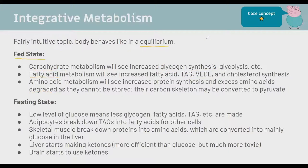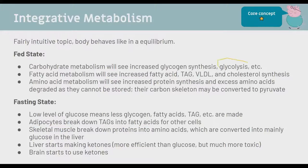In the fasting state, glucose is low so less glycogen, fewer TAGs in adipocytes, and less synthesis occurs. Breakdown processes dominate: adipocytes break down TAGs into fatty acids, skeletal muscle breaks down proteins into amino acids which can be converted to carbohydrates via gluconeogenesis, and the liver starts making ketones. Ketones are more efficient than glucose but can be toxic in excess, leading to acidosis. Fed state stores; fasting state mobilises.